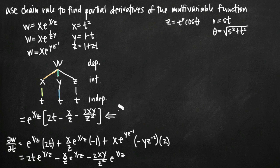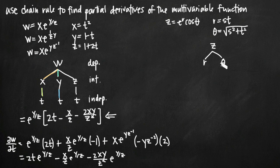Now jumping over to the second multivariable function where we have two independent variables, we'll again use a tree diagram. z is our dependent variable at the top, it's in terms of r and θ — those are our intermediate variables. r is in terms of s and t, and θ is also in terms of s and t. When you have two independent variables, you're going to end up with a final answer for partial derivatives in terms of each one.